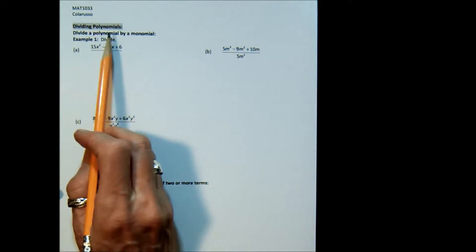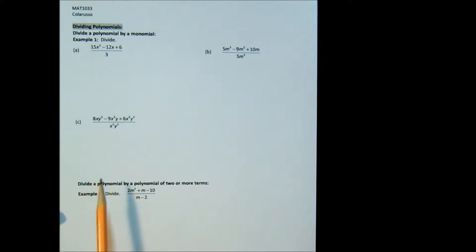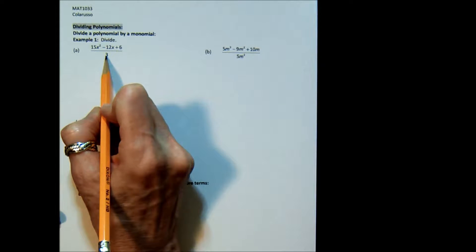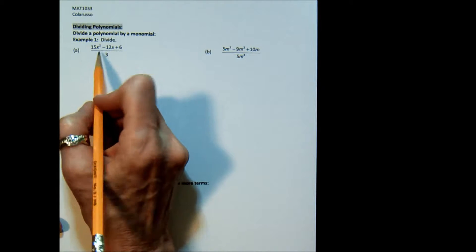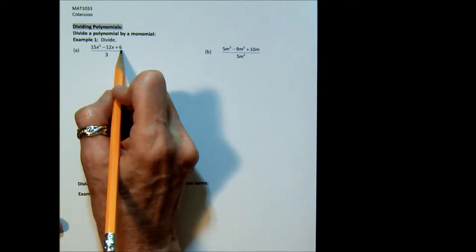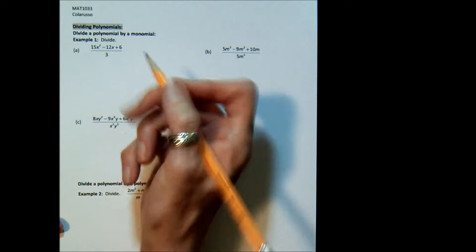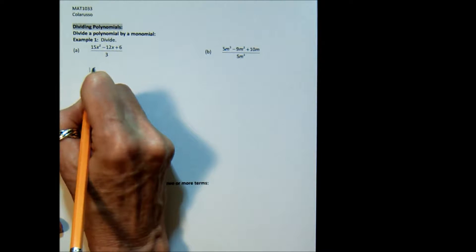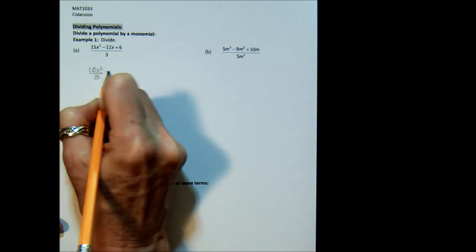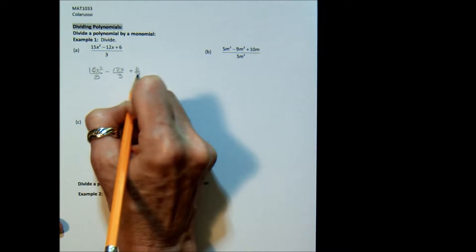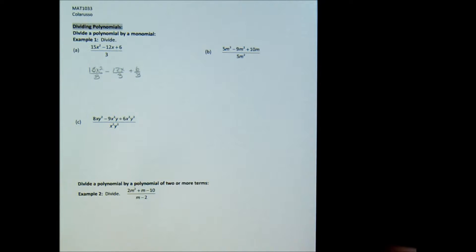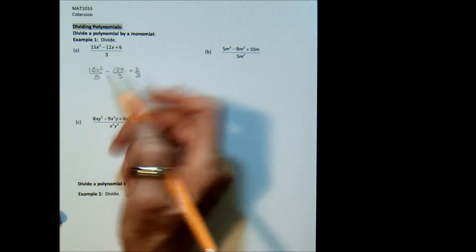This topic is dividing polynomials, and we're going to do a quick review first of dividing a polynomial by a monomial — that means your denominator has just one term. In Example 1, we've got 15x² minus 12x plus 6 divided by 3. The process is to take your big fraction and split it into smaller fractions determined by however many terms are in your numerator, and then you just cross-cancel.